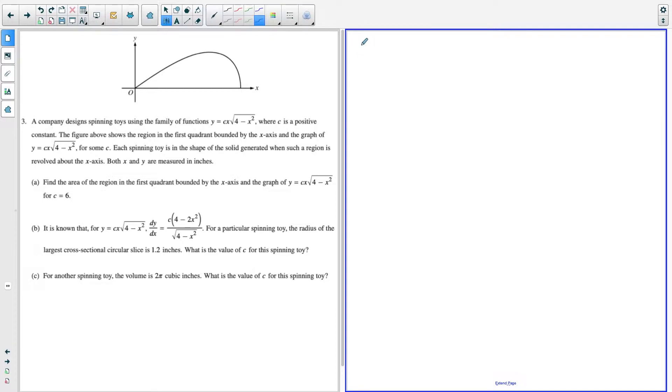So this is the spinning toy question, and this one was definitely a tricky question. For part A, the first thing we're going to do is find the area under the curve when C is equal to six.